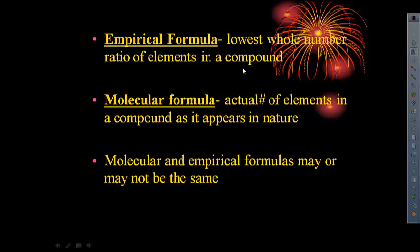An empirical formula is the lowest whole number ratio of the elements in a compound, while the molecular formula is the actual number. Now, it could be the lowest whole number ratio, or it could be a multiple of the lowest whole number ratio, a multiple of the empirical formula. So sometimes they're the same, sometimes they're different.